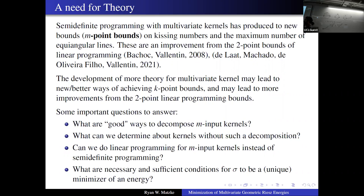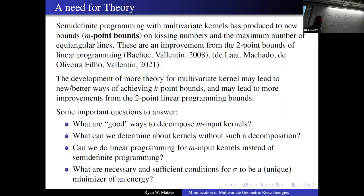Some important open questions: What are good ways to decompose multivariate kernels? We saw things with Gegenbauer polynomials earlier; even decomposing a simple quadratic polynomial got rather complicated, and the semi-definite programming decompositions are very complicated. What can you determine about a kernel without decomposing it? Can we reproduce the theory from Doug and Ed's talks for the multivariate case? Can we do just normal linear programming for m-input kernels rather than the more complicated semi-definite programming? And finally — seemingly simple but very important — what are necessary and sufficient conditions for the uniform measure to be a minimizer of the energy? We don't have that for anything of great interest, and that would be a fascinating result that could help answer each of the other questions.